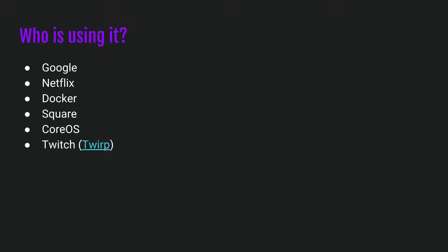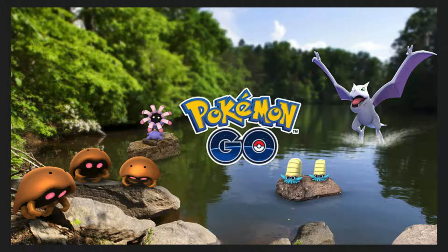So who is using gRPC? Obviously Google, because they developed it and open sourced it. Companies like Niantic, who make Pokemon Go, also use gRPC. Netflix uses it a lot for their internal services. Docker, Square, CoreOS, and even Twitch — though Twitch developed their own version of RPC called Twerp, which is also open source on GitHub. Pokemon Go is an example of a pretty big application using this in production.